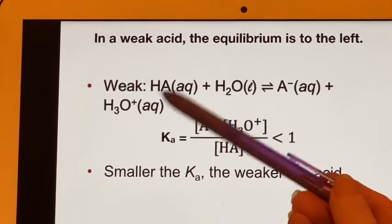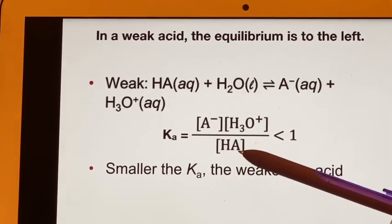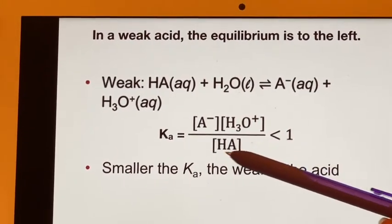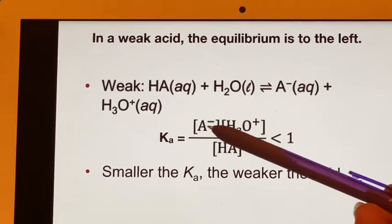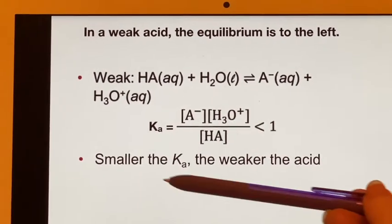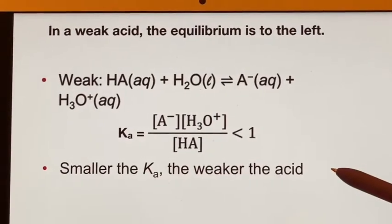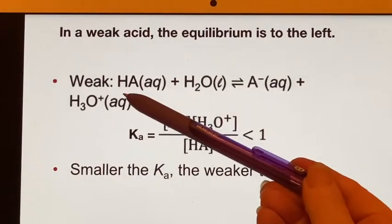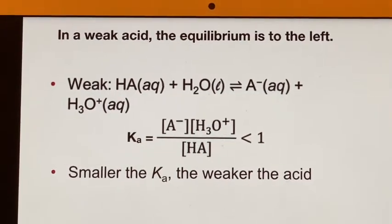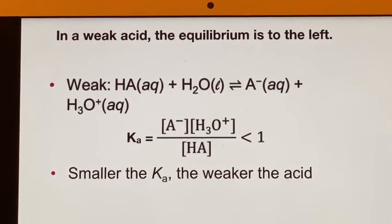It will do a little. It breaks apart, but mostly it stays together, and so this stays as a reasonably sized number, and these are smaller numbers. So the smaller the Ka, the weaker the acid. It just isn't interested in coming apart and forming hydronium ions. It doesn't want to donate a proton.